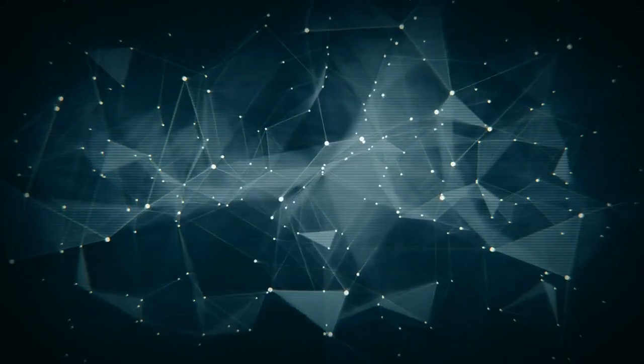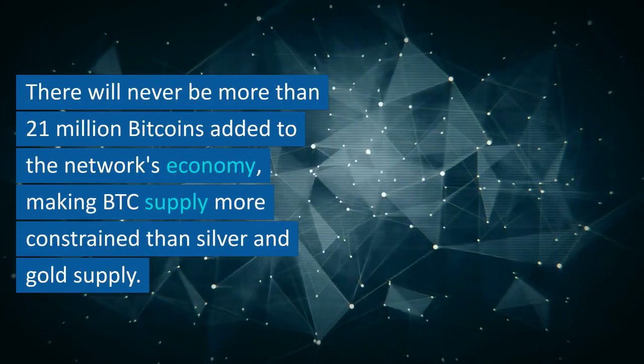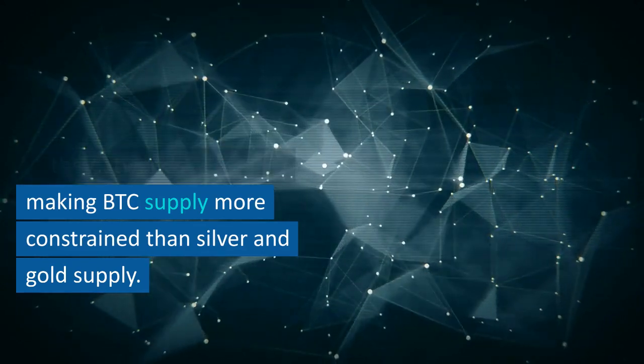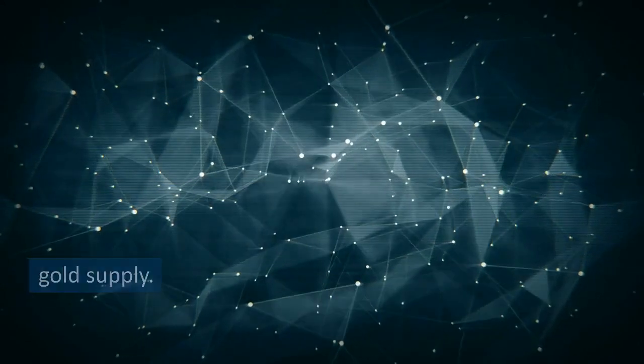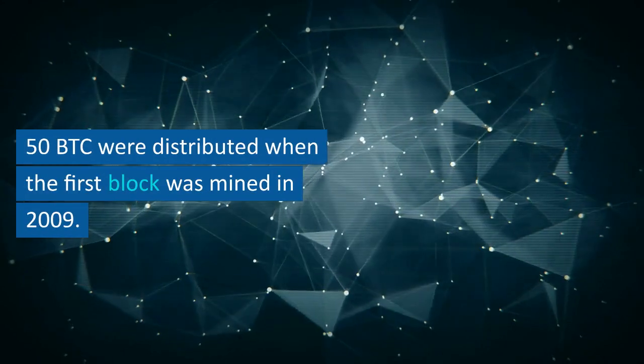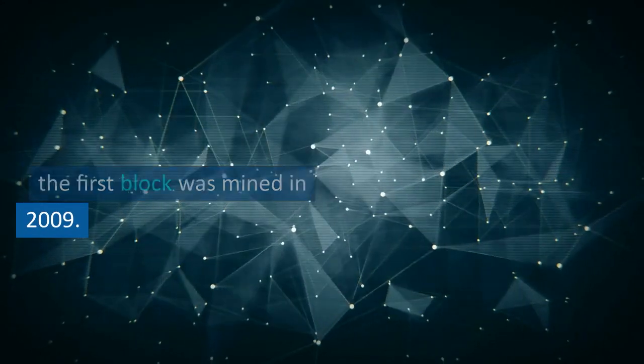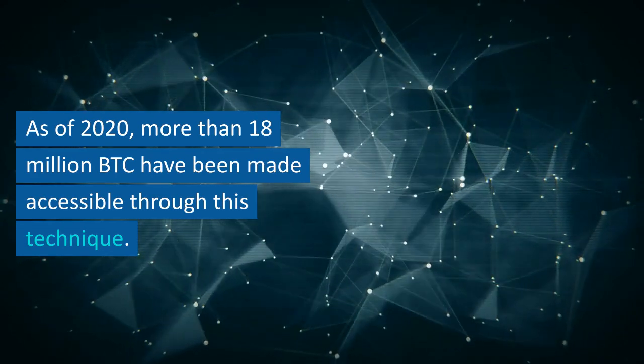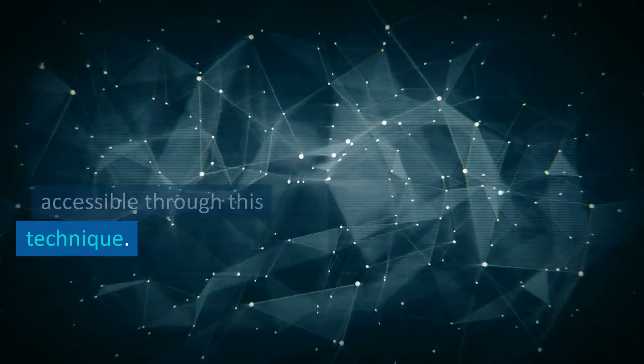Scarcity. There will never be more than 21 million bitcoins added to the network's economy, making BTC supply more constrained than silver and gold supply. 50 BTC were distributed when the first block was mined in 2009. As of 2020, more than 18 million BTC have been made accessible through this technique.